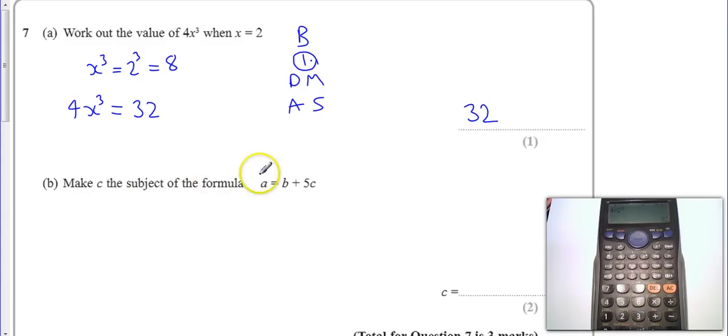Part B, make C the subject. So we want an equation C equals at the end. So what we need to do, let's write this out, A equals B plus 5C. Well, I'm going to take away B from both sides of my equation.